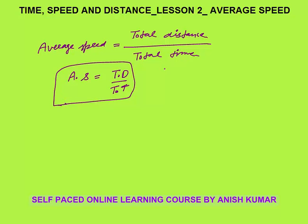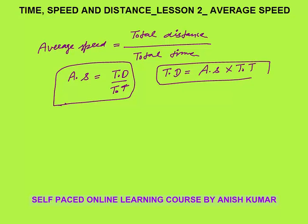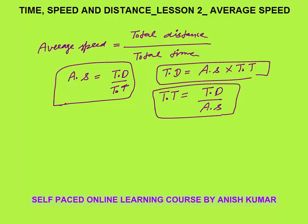If you need to calculate total distance, total distance equals average speed multiplied by total time. By cross-multiplying, total time equals total distance divided by average speed. You can rearrange the variables to find whatever is required.